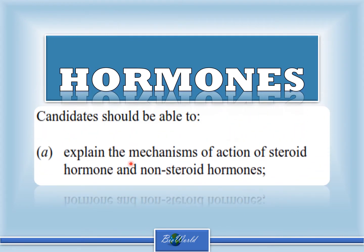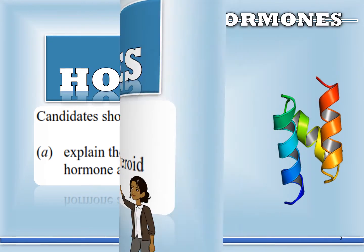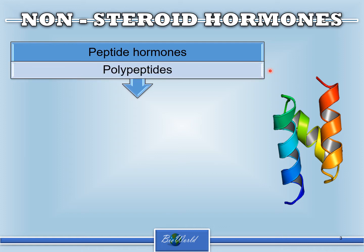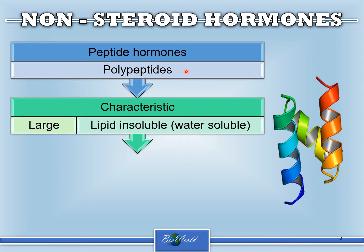This time I'm going to cover the second part of the syllabus related to non-steroid hormones. Non-steroid hormones are also known as peptide hormones since they are made up of polypeptides. They are large since they are proteins and they are water soluble, meaning that they are lipid insoluble. So these molecules cannot cross the phospholipid bilayer.